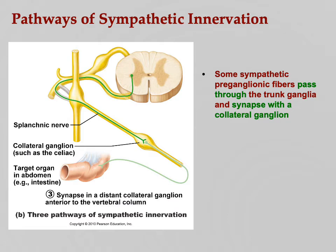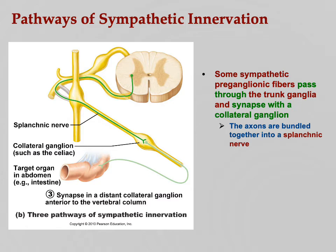In some cases, pre-ganglionic fibers pass through the sympathetic trunk entirely without synapsing, going out to one of the collateral ganglia such as the celiac, superior mesenteric, or inferior mesenteric. These fibers are called splanchnic nerves — the CH is pronounced like a K, so 'splanchnic.' The splanchnic nerves are pre-ganglionic fibers that pass through the sympathetic trunk and go to these collateral ganglia.